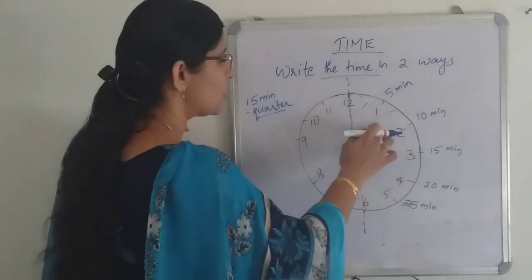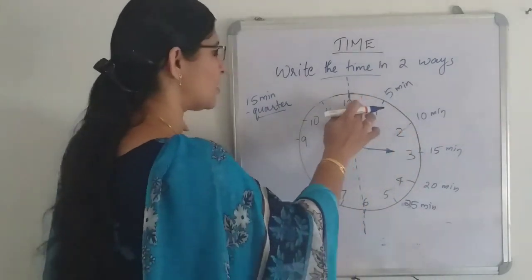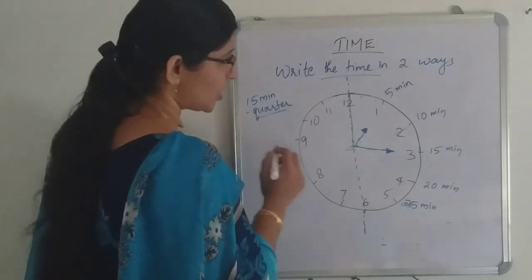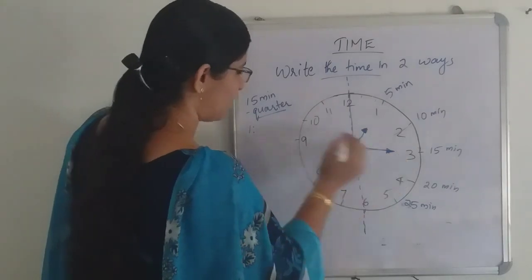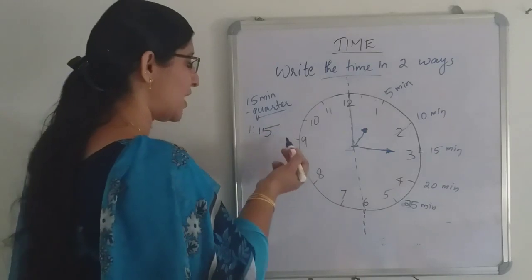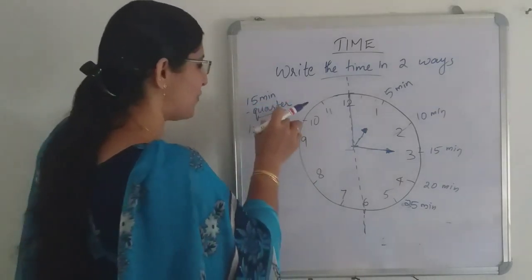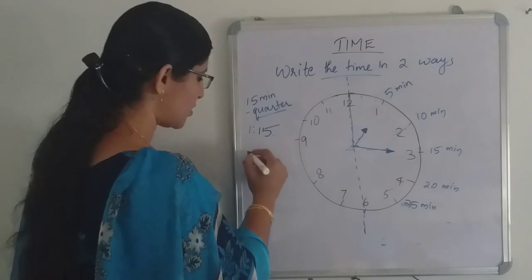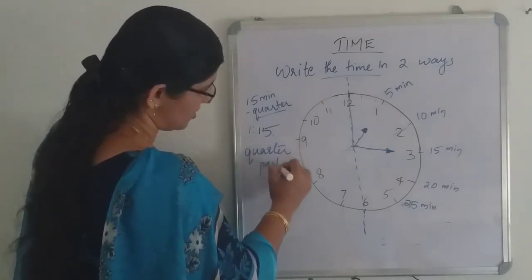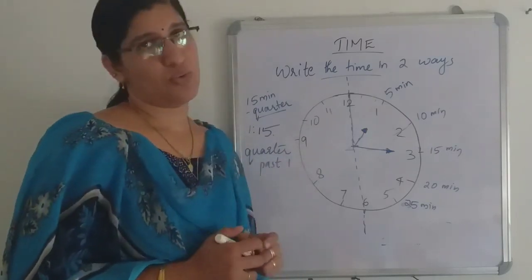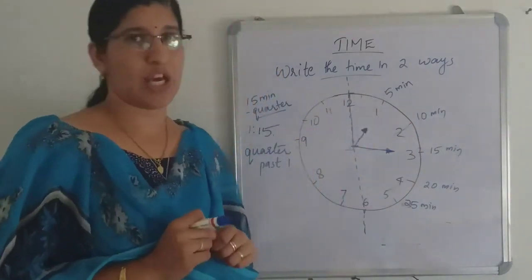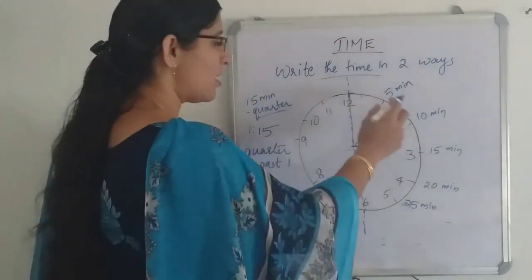Whenever the minute hand reaches 15, you do not write '15 minutes past' — you write 'quarter past.' So the time 1:15, instead of '15 minutes past 1,' is written as 'quarter past 1.' Be very careful whenever 15 minutes has come.